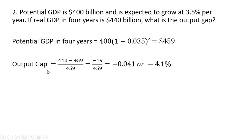So plugging our values into the output gap formula — real GDP in year four is $440 billion minus potential GDP, all divided by potential GDP — we get an output gap of minus 0.041, or minus 4.1%. Another recession. That's it. I hope you found this video helpful.